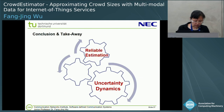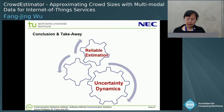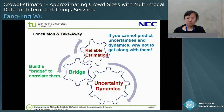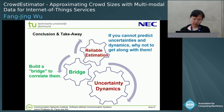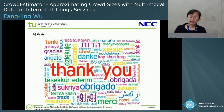Here is the conclusion. If you cannot predict uncertainty and the dynamics, why not get along with them? In our work, we propose to build a bridge that can connect uncertainty and dynamics with reliable estimation. We can select adequate sensors, correlate them, and adapt to the concept. Thank you for your attention — I will be happy to take any of your questions.